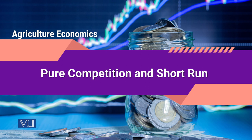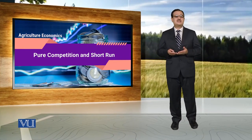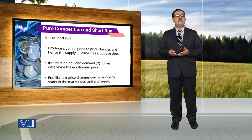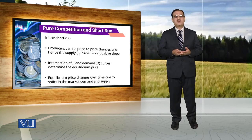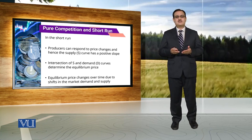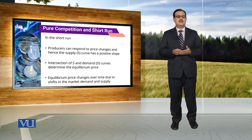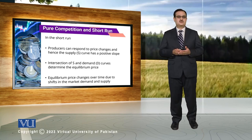Pure competition and short run. जब हम pure competition की बात करते हैं, this is basically a very close example of perfectly competitive market structure. In purely competitive market structure, हमारी assumption यह है कि वहाँ पे sufficiently large number of buyers and sellers होते हैं, और फिर the product that is being traded in the market is homogeneous in nature.